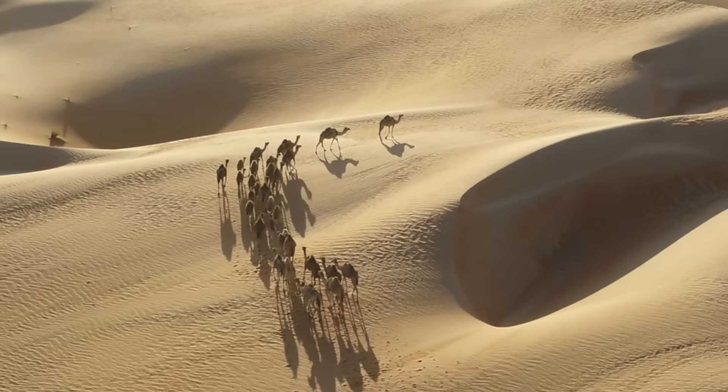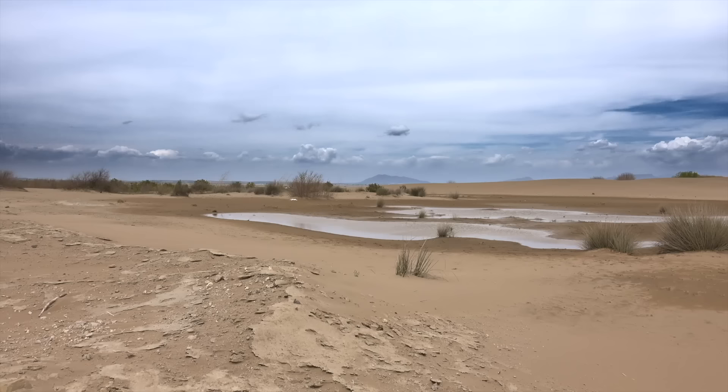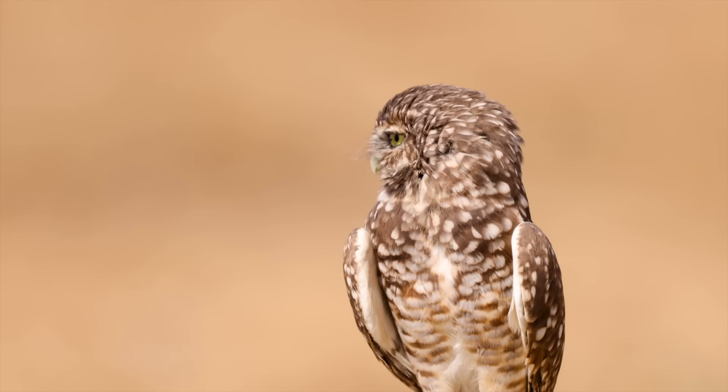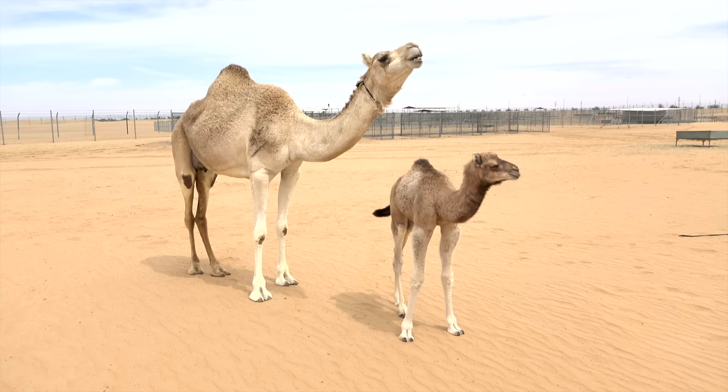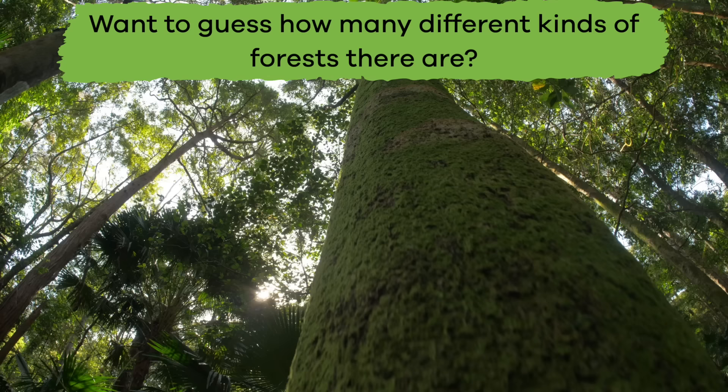Now let's travel to the desert. A desert is extremely dry, can be hot or cold, and gets less than six inches of rain per year. Deserts are found everywhere on the planet. There is little plant life, but animals like snakes, lizards, birds, camels, kangaroos, and more can all survive in the desert.